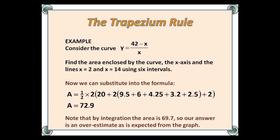Now we can substitute into the formula. So A equals a half times 2 for the height, then 20 plus two lots of 9.5 plus 6 plus 4.25 plus 3.2 plus 2.5, and then finally plus 2, giving an area of 72.9. Note that by integration, the area would have been 69.7, so our answer is an overestimate, as would be expected from the shape of the graph.